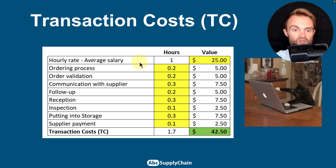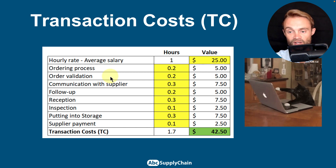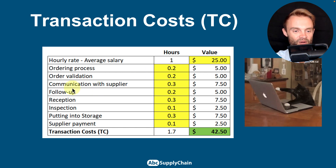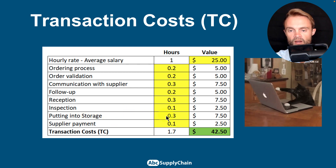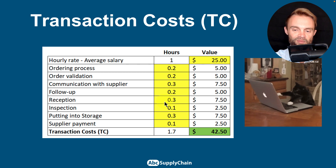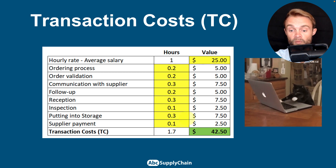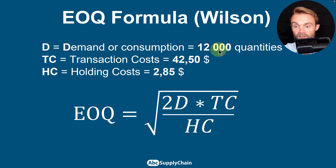In this specific example, we use the hourly rate of the person responsible for ordering. You include the ordering process itself, order validation — when I was Supply Chain Director I had to approve orders, which was painful — communication with suppliers, follow-up by email or phone, receiving the products, inspection, putting them into storage, and supplier payment. In this example it totals about two hours and $42 to process one order.